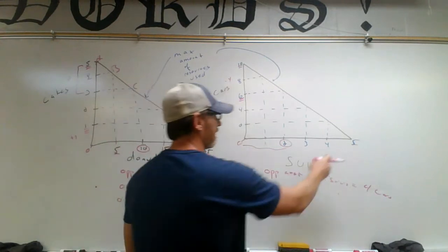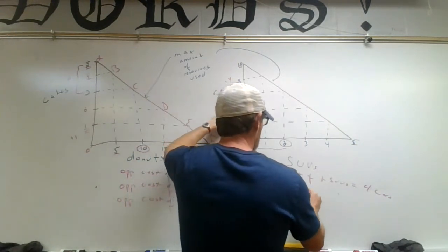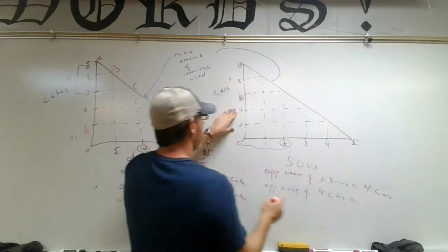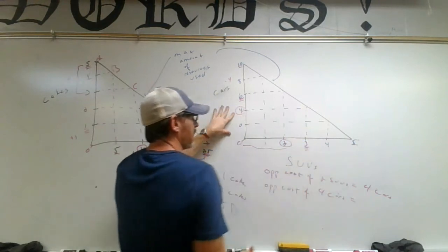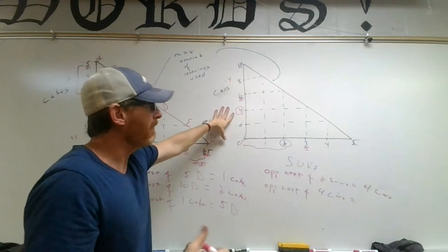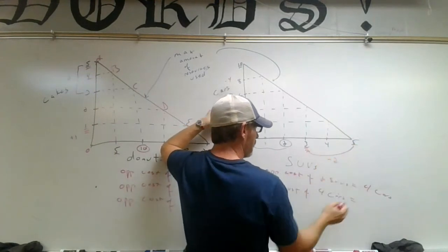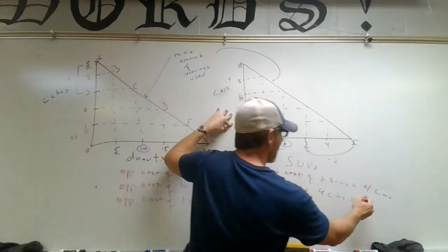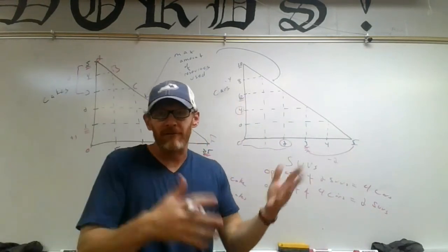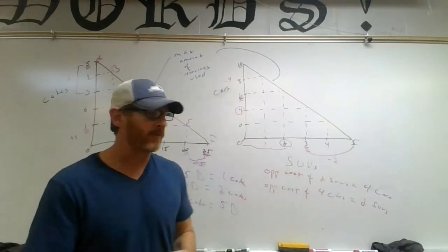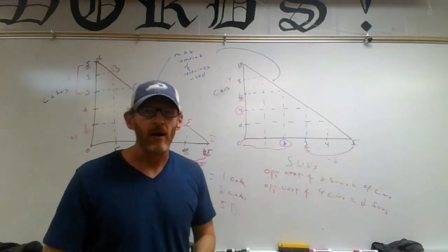Let's say we start at five SUVs and want to add four cars. Making four cars means we go over to our line and have enough resources left to make three SUVs. We were making five SUVs but now we're making three, so we had to give up two SUVs. The opportunity cost of four cars is two SUVs. We don't have enough resources to make everything we want — economics is about decision-making and where to put our resources.